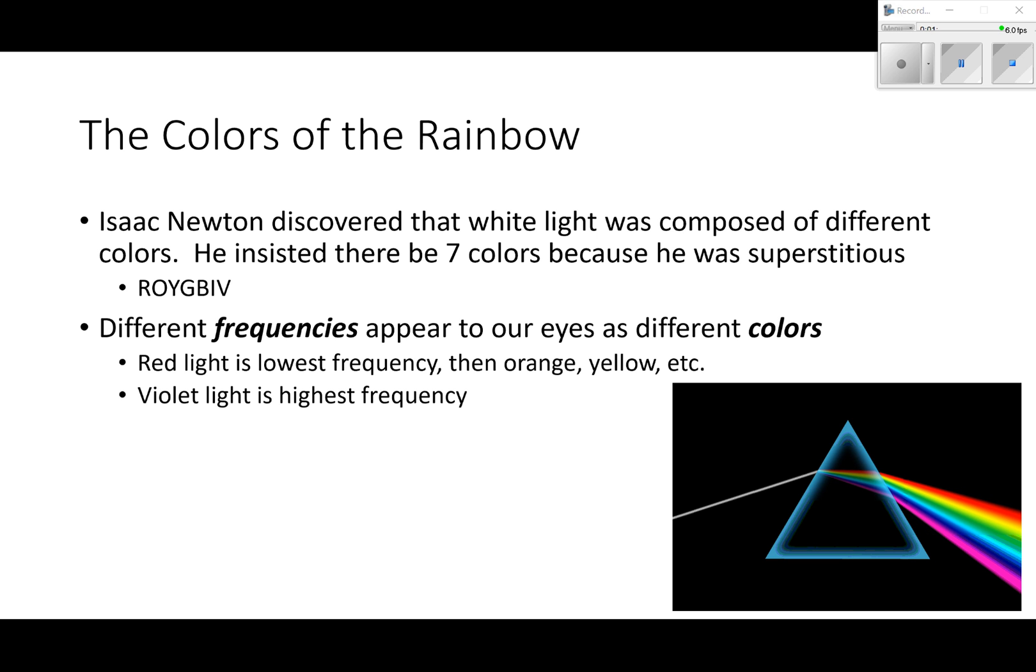Most people agree there's really nothing between blue and violet, but Newton really wanted to shove indigo in there just so there could be seven colors. We see different frequencies - different frequencies appear to our eyes as different colors. Red light is the lowest frequency light, then orange is second lowest, then yellow, green, blue, indigo, and violet light is the highest frequency. So when we see different colors, we just see the same thing but different frequencies.